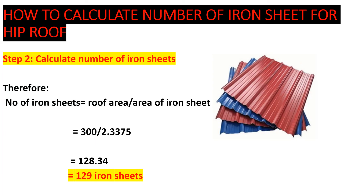The number of iron sheets = roof area ÷ effective area of one iron sheet = 300 ÷ 2.3375 = 128.35, which rounds up to 129 iron sheets. You can also allow for a wastage factor of around 5%, depending on your project. That is how to get the number of iron sheets. Thank you guys for your time and support — until next time, bye!